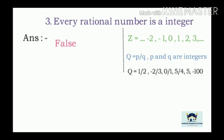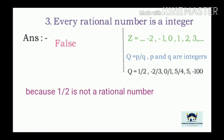Third example: Every rational number is an integer. Rational numbers are in the form of P by Q, therefore every rational number is not an integer. So the given statement is false.